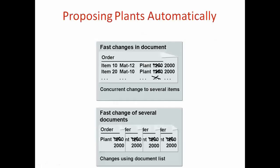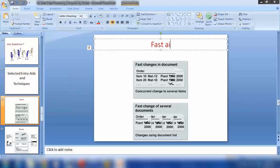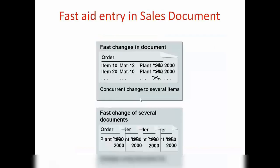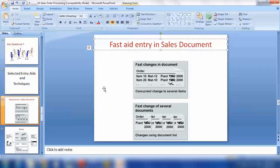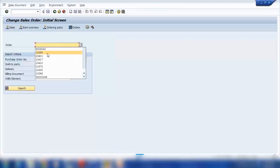Today we will see some more functionality within a sales order — specifically how you can make fast changes in several documents or one document. For example, if I open a sales order here, let me open an old sales order.